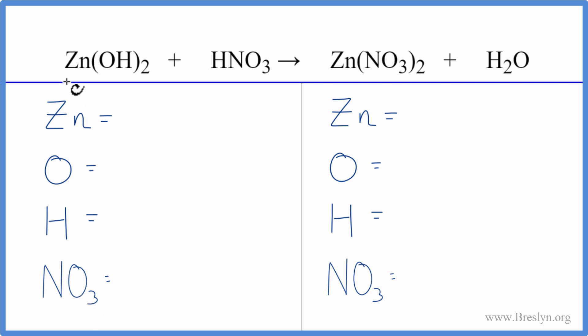So let's count the atoms up. We have one zinc. We have two times one, so two oxygens. And we're going to ignore this oxygen here because it's in our nitrate group. We have two times one, that gives us two hydrogens, plus we have the one hydrogen here. So we have three total hydrogens and the one nitrate.